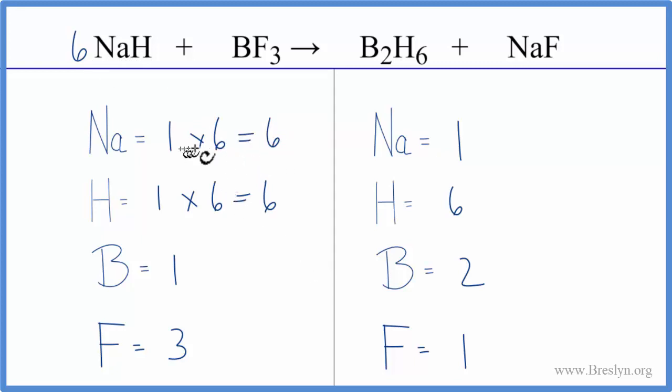Maybe we balance the sodium now by putting a six in front of the NaF. We have one times six, so now the sodiums are balanced, and then for the fluorine here, we have one times six. So now we have six fluorine atoms.